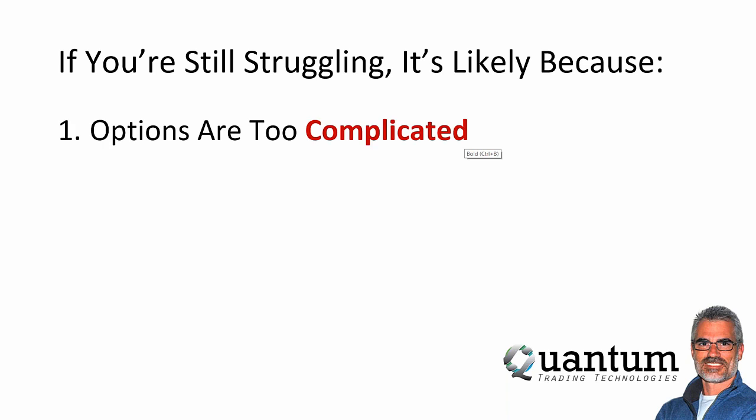I've been in the industry for a long time and talked to thousands of traders, and most of them are struggling. If you're still struggling, it's probably because of one of several things — maybe all of them. Number one: options are too complicated. You have all the Greeks and have to figure out how they go together. But options are not too complicated. I don't ever use a Greek when I trade options. I've been trading options since 1987 — they are much more simple than most people believe.